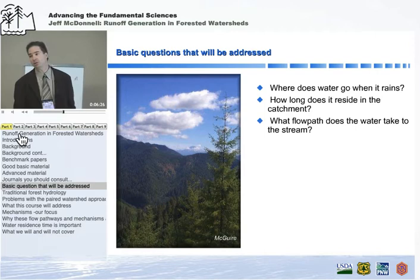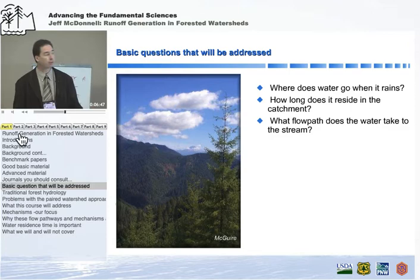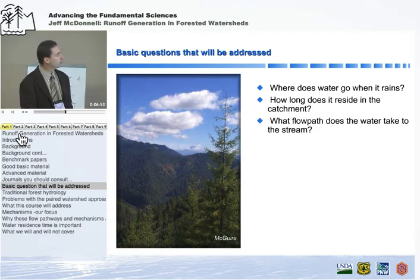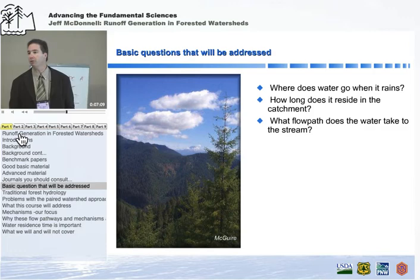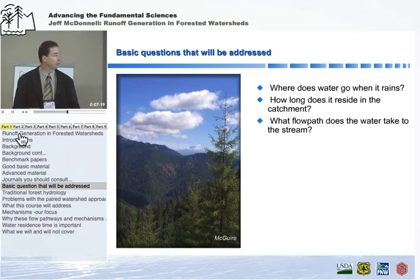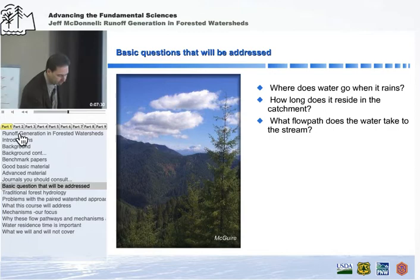What we're going to look at this morning are basic questions — fundamental to how we manage watersheds, and also linking water quantity, water quality, debris flows, spatial patterns of vegetation in water-stressed environments, and dissolved load in streams. These basic questions are: where does water go when it rains or when snow melts, how long does it reside in the catchment, and what flow path does it take to the stream? The flow path determines how labile nutrients like dissolved organic carbon or nitrate are flushed, and the residence time determines geochemical constituents — contact time in the subsurface is a first-order control on dissolved load in the stream.